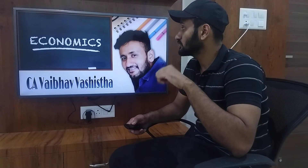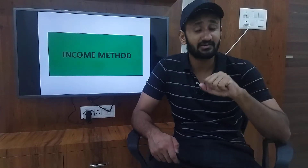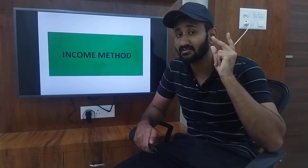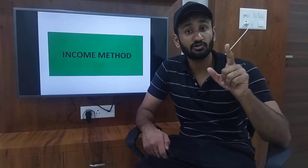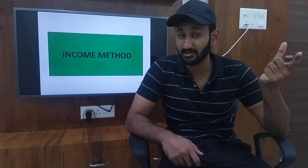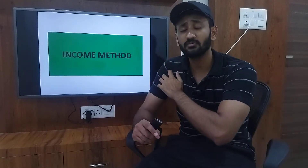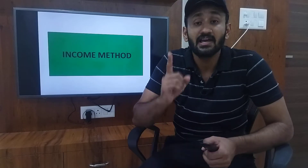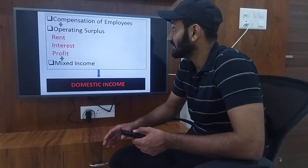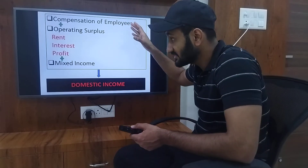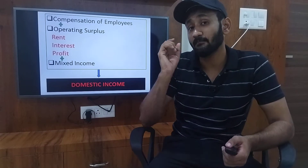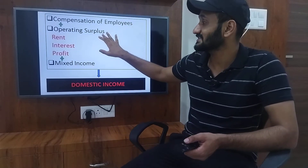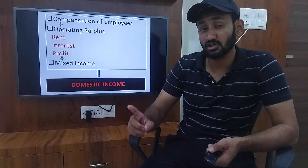Students, we have already seen the three methods to calculate national income: first was value added method, then income method, then expenditure method. We already covered value added method and its precautions in a separate class. Then we started income method, where we saw that we only take factor income. We also saw the components of factor income: compensation of employees, plus operating surplus, plus mixed income — adding these gives us domestic income.